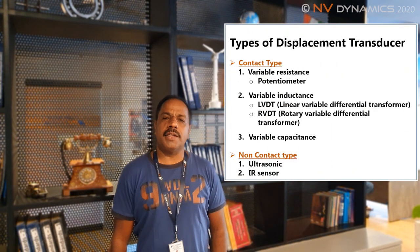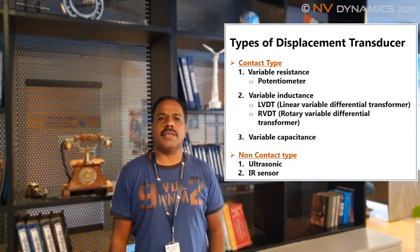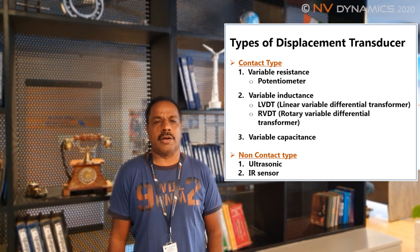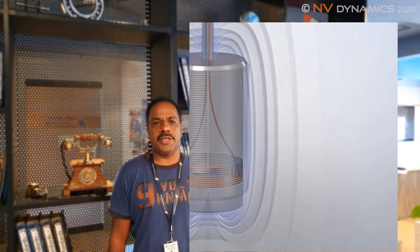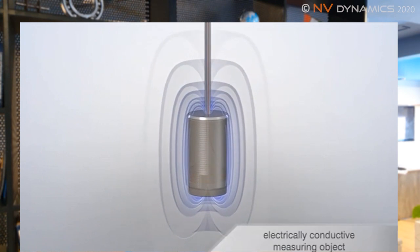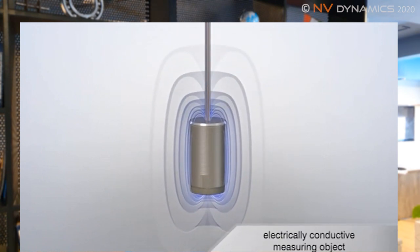Let us begin with displacement transducers. There are basically two variants: contact type and non-contact type. For reference, let us look at a non-contact type where a steel armature moves in the vicinity of a magnetic or an electrical field.